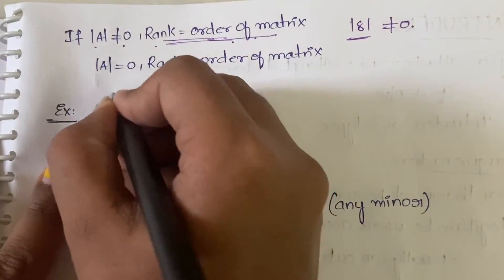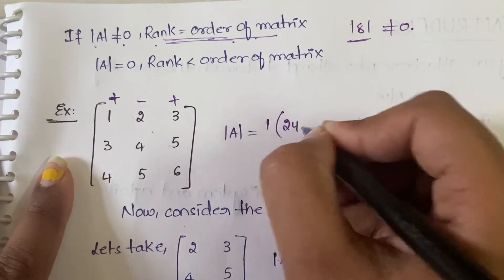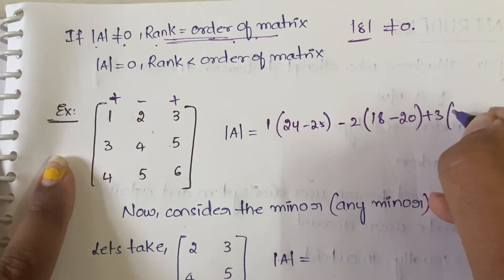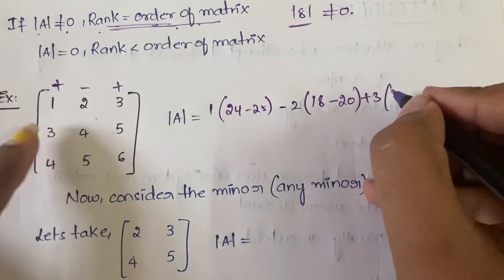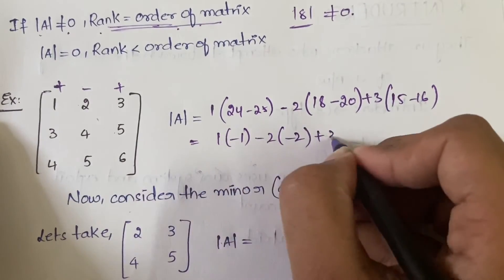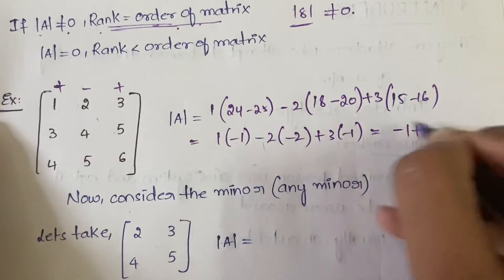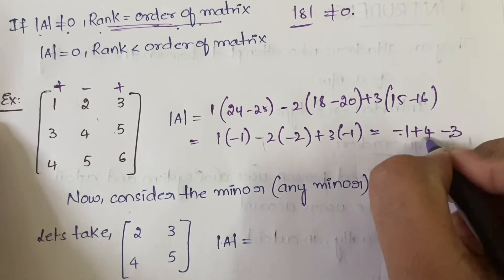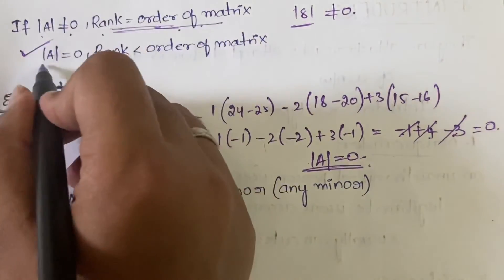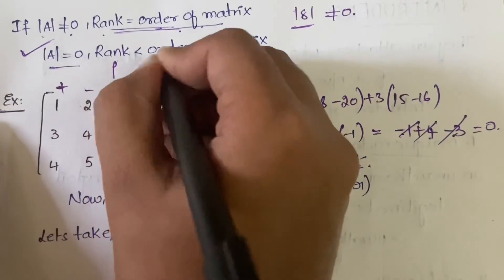Let us calculate the determinant for the second example quickly. Signs: plus, minus, plus. You get 1 × (4×6 − 5×5) = 1 × (24 − 25) = 1 × (−1). Next minus 2 × (3×6 − 5×4) = minus 2 × (18 − 20) = minus 2 × (−2). Next plus 3 × (3×5 − 4×4) = 3 × (15 − 16) = 3 × (−1). So: −1 + 4 − 3 = 0. The determinant of A equals 0.